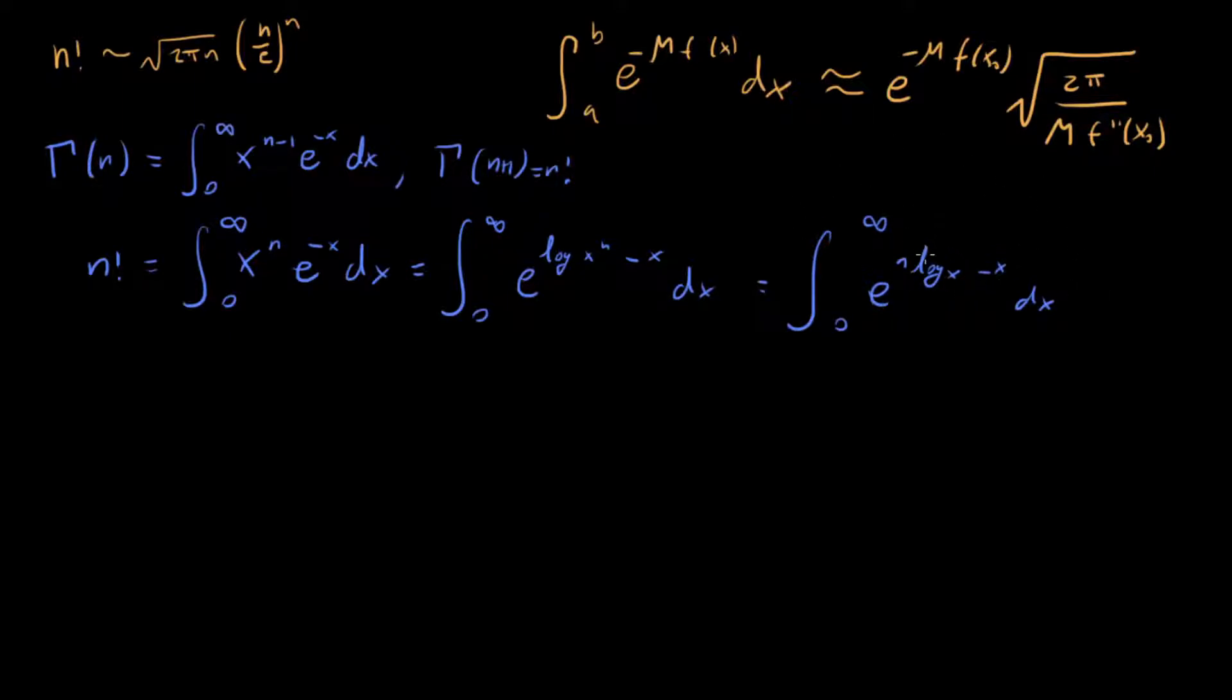And then this function log x minus x looks a little bit like this. If we plot it, then we see that it looks like this. And this function, we can see is going to be the type of thing that we can approximate as a Gaussian, especially as n gets large.